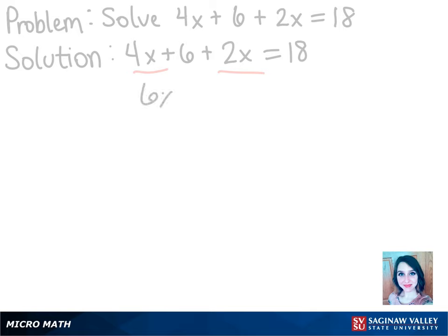That way we will get 6x plus 6 equals 18. Now we want x by itself on the left side, so we can subtract 6 from both sides. It cancels, so then we're left with 6x equals 12.